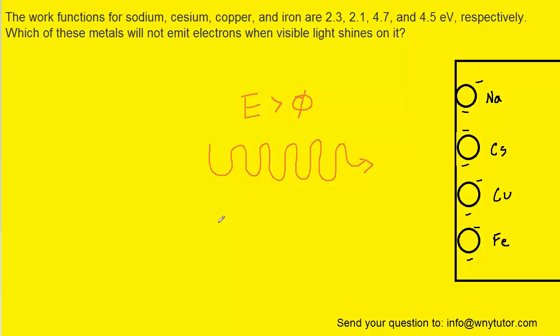The converse is also true. That is, if the energy is less than the work function of each atom, then an electron will not be emitted. This is the key idea that we need to refer to when solving the question.